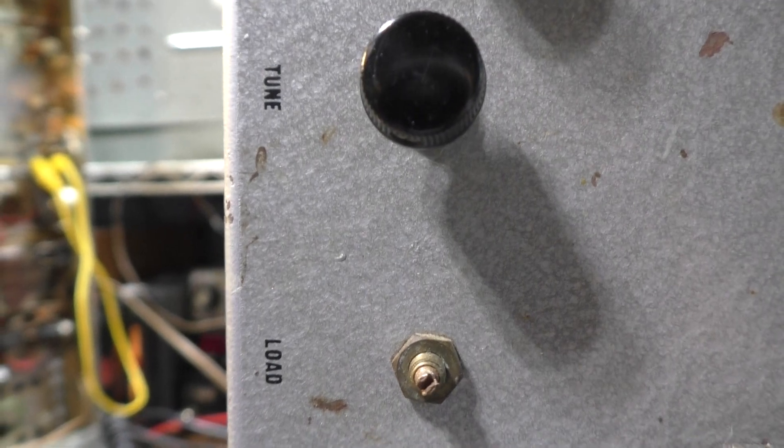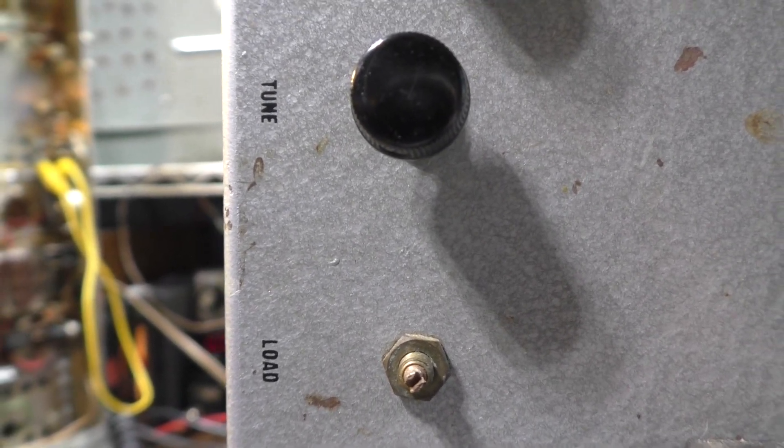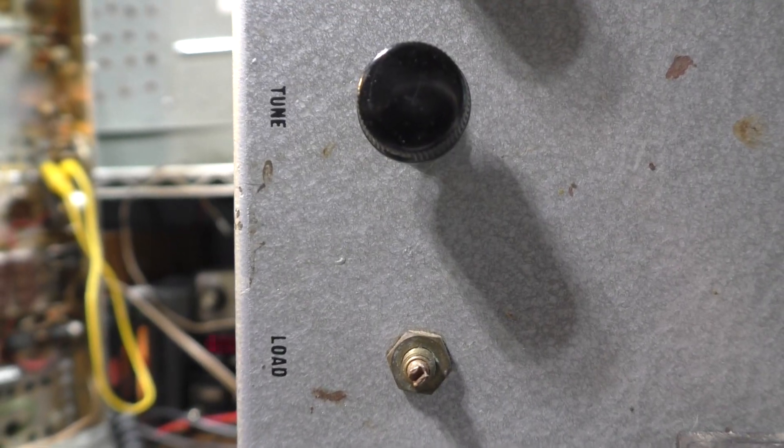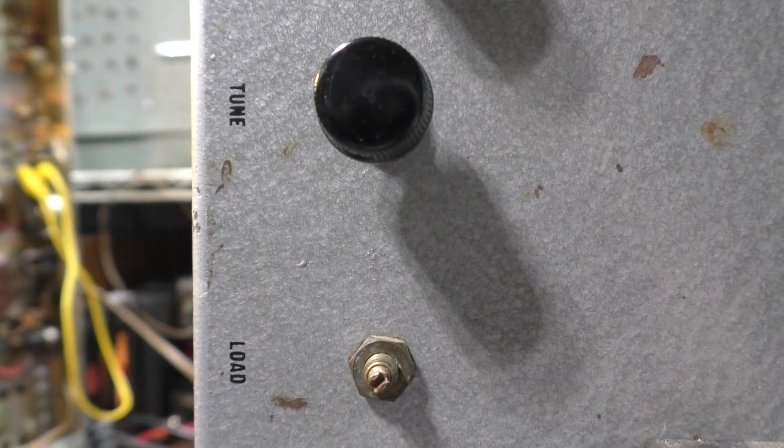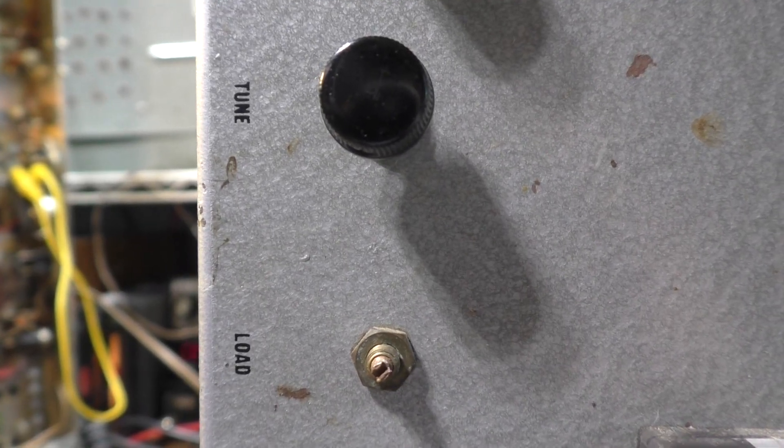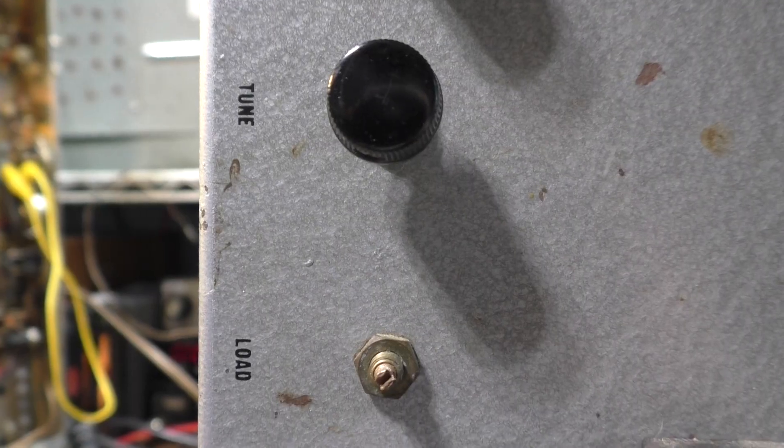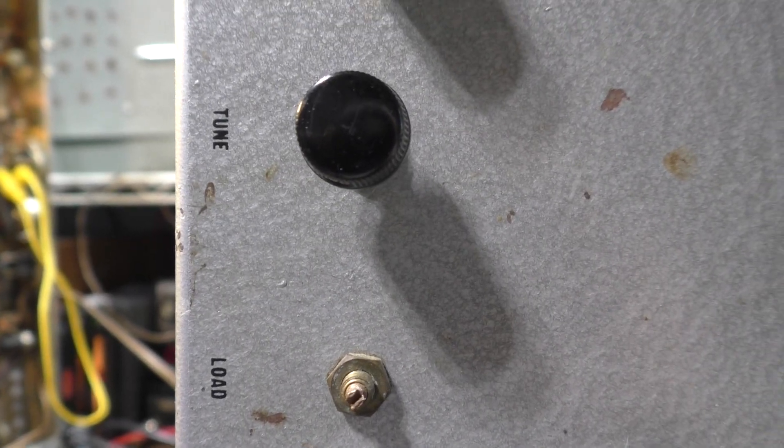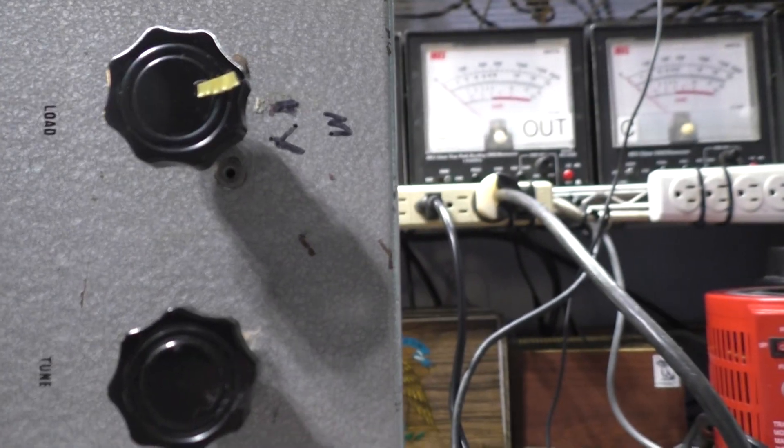For the driver tubes on the low side it uses this tune and load right here, so you're tuning the drivers since they're going to the output instead of going into the final tubes. It needs different tune and load parameters, so it has a separate tune and load.